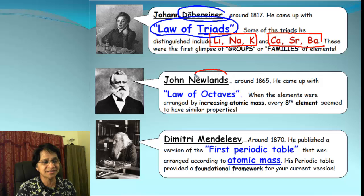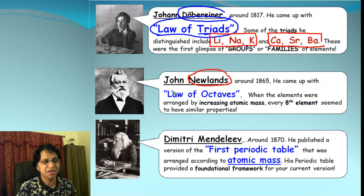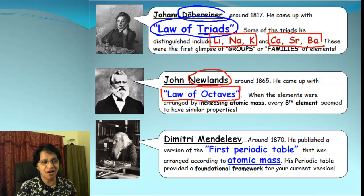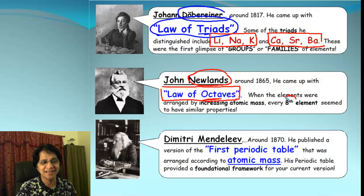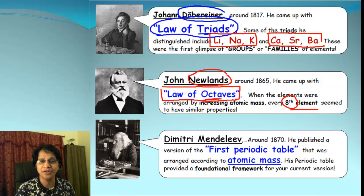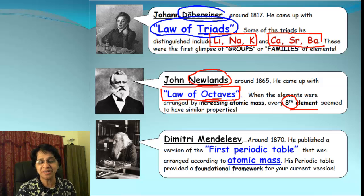The next scientist, Newlands, came forward and proposed the law of octaves. Octaves has the word 'octa,' which stands for eight. So when he arranged the elements, every eighth element was showing similar properties. Again, it was a great idea, but it did not work for all the elements.